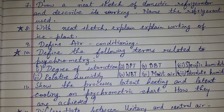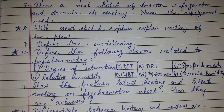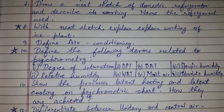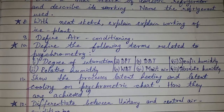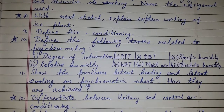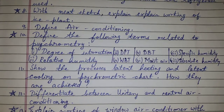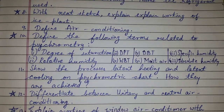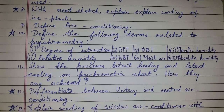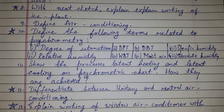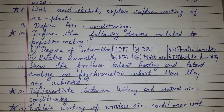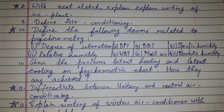Continue defining psychrometry terms: DBT, moist air, specific humidity, and absolute humidity. Also, show the processes of latent heating and latent cooling on a psychometric chart and explain how they are achieved.